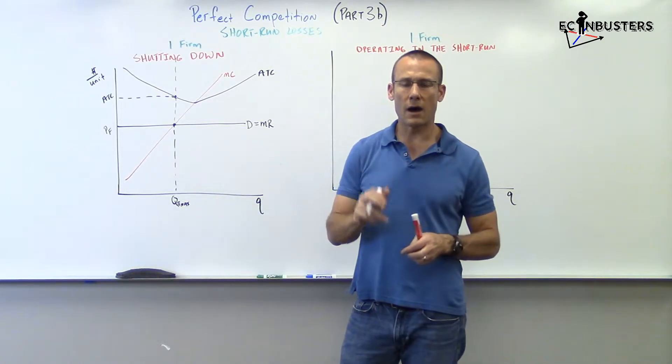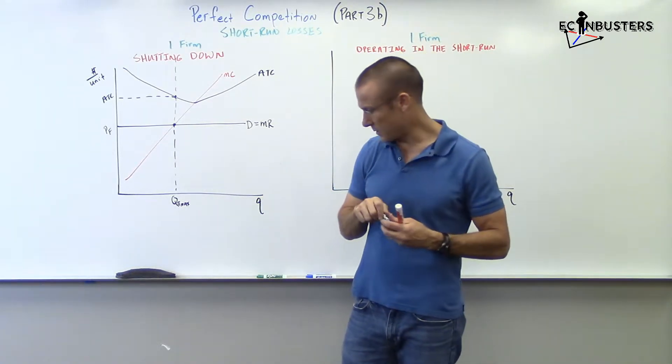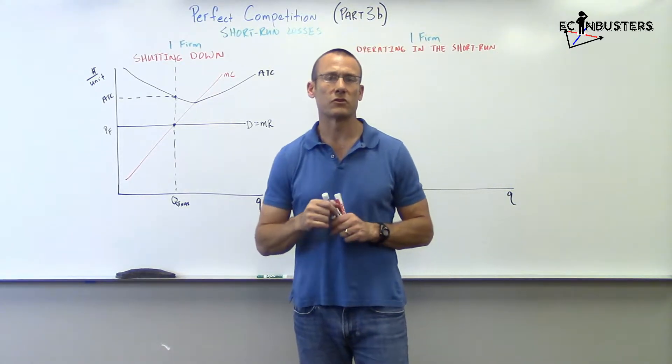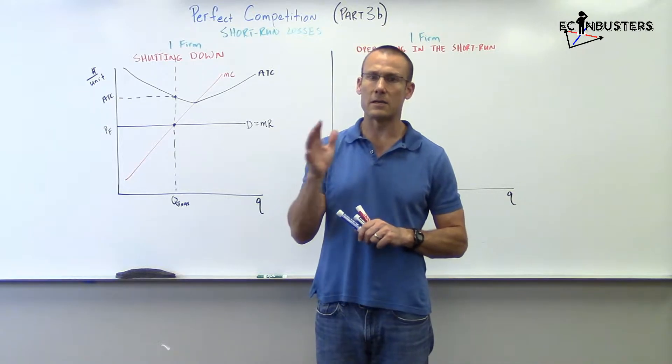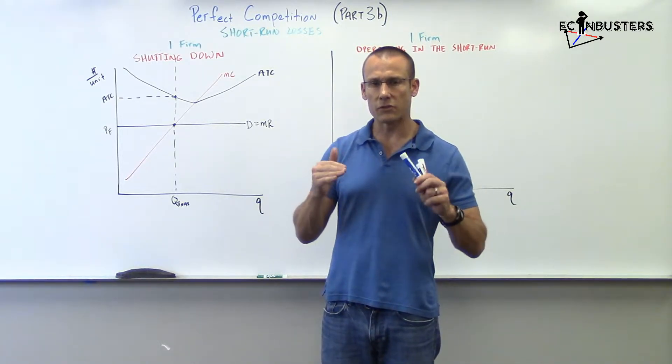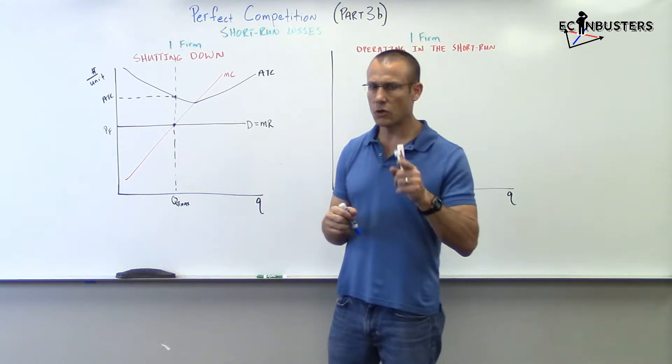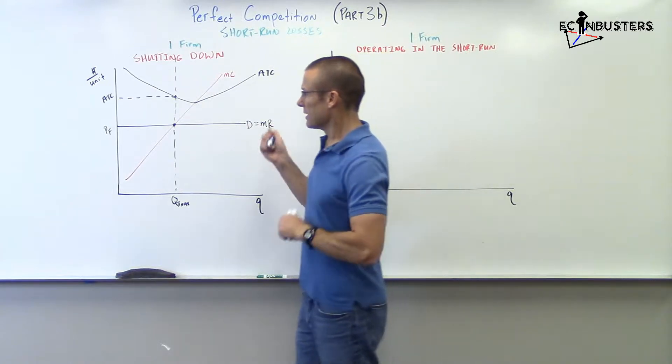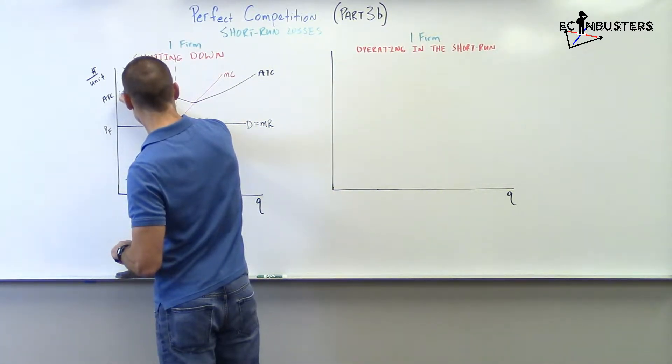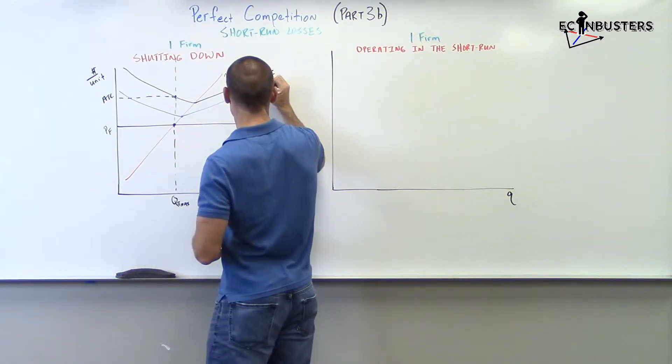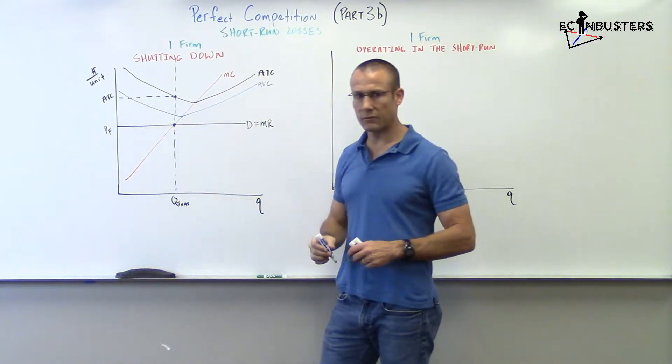But should this firm operate or should they shut down? This decision, this short-run decision, is based on the average variable cost curve. We need to add another curve. It's all about prices relation to average variable cost. Let me show you what the situation would be and why they would shut down.